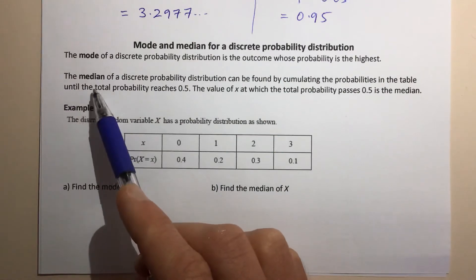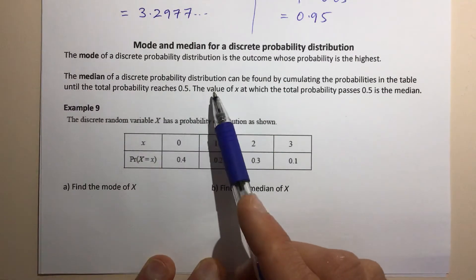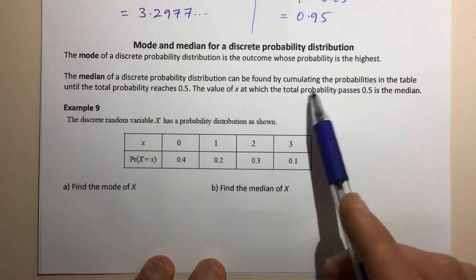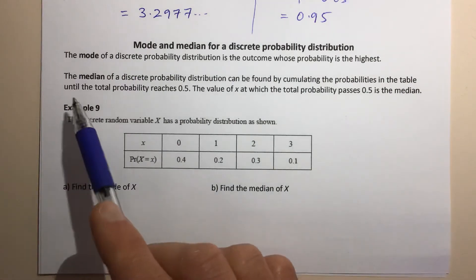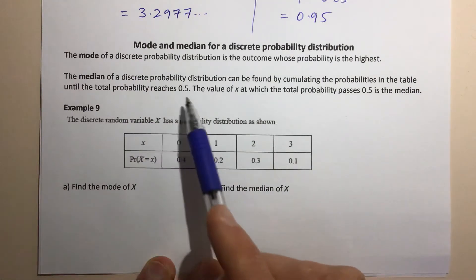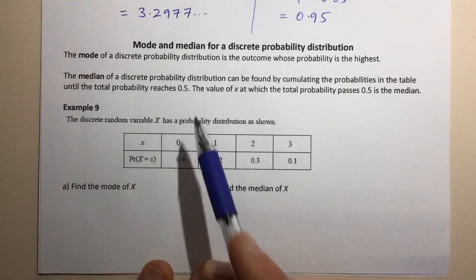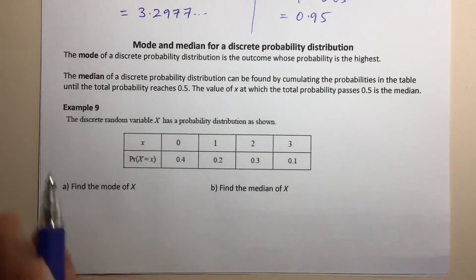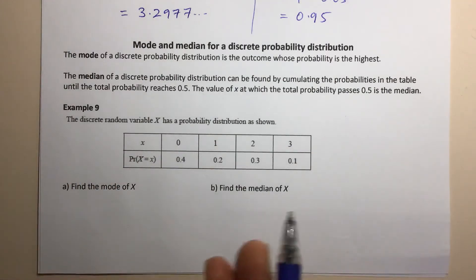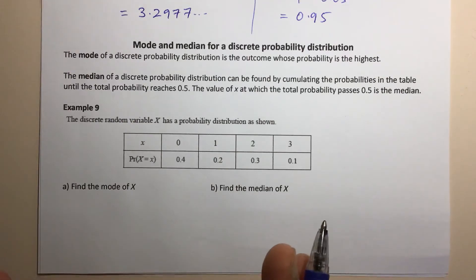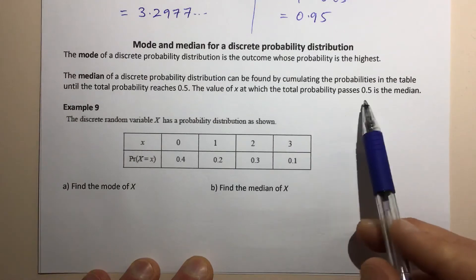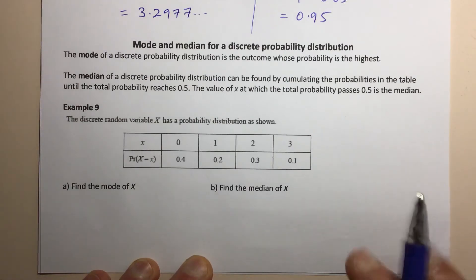The median of a discrete probability distribution can be found by accumulating or adding together the probabilities in the table until the total probability reaches 0.5. Wherever you get to a summed probability of 0.5, you've reached halfway through the distribution, and the value of X at which the total probability passes 0.5 will be the median.